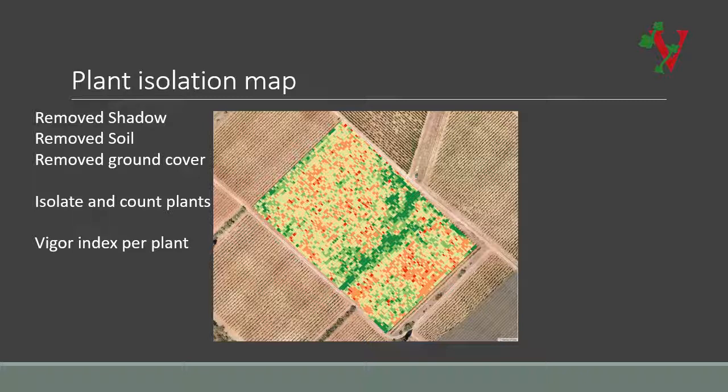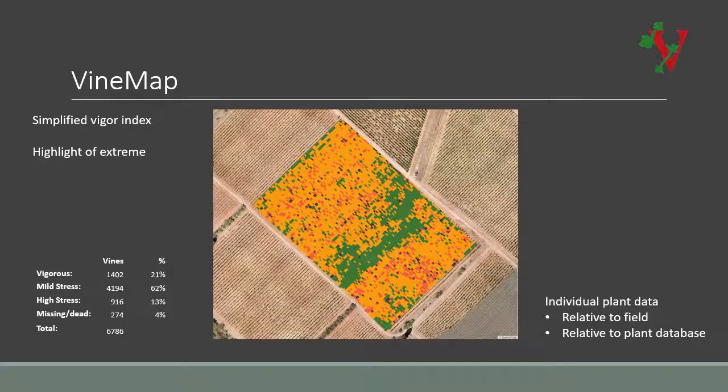In this Vingineers' version of the NDVI map, it is immediately easier to see the vigorous and stressed regions. The vine map simplifies vine vigor into three categories and allows for the analysis of different field regions, as well as direct segmentation of vines to improve harvest quality. Note also the analysis of counts for each level of vigor.